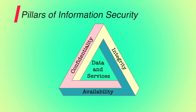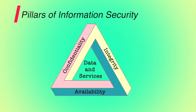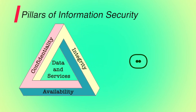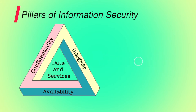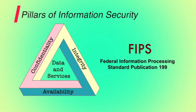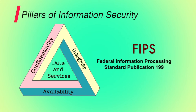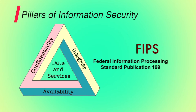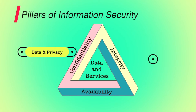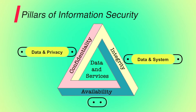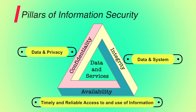What are the pillars of information security? Information security rests on three main pillars: confidentiality, integrity and availability. These three pillars form what is often referred to as the CIA triad. The three concepts embody the fundamental security objectives for both data and for information and computing services. FIPS PUB 199 provides a useful characterization of these three objectives in terms of requirements and the definition of a loss of security in each category. Confidentiality covers both data confidentiality and privacy. Integrity covers both data and system integrity. And availability ensures timely and reliable access to and use of information.